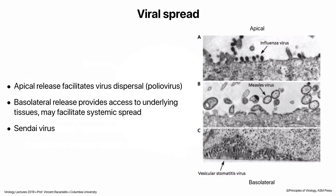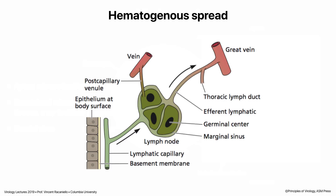Once the virus gets beyond the epithelial sheet and the basement membrane, it has access to the sub-epithelial spaces, which are full of lymph capillaries and blood capillaries. Lymphatic capillaries tend to be more permeable than blood capillaries, so viruses can get into them quite readily. Once in the lymph system, you can go through a lymph node and get into the circulation. A virus can then spread anywhere, because the circulatory system supplies everywhere.